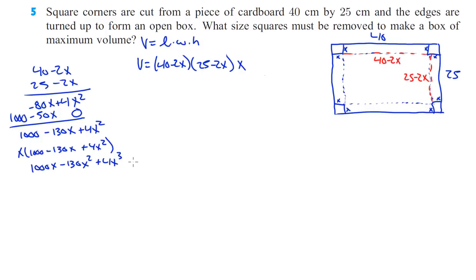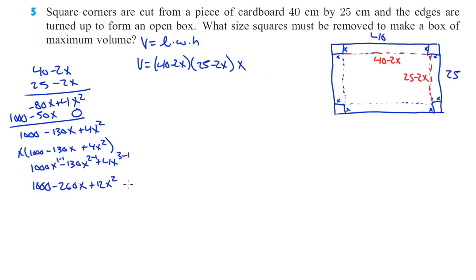That's our volume function. Now we take the derivative and set it equal to zero. The derivative: 1,000x to the first gives us 1,000; 2 times negative 130 is negative 260x; and 3 times 4 is 12x squared. So our derivative is 1,000 minus 260x plus 12x squared, and we set that equal to zero.